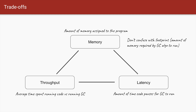The third aspect is latency. Latency is how much time our program stops whenever garbage collection runs. These pauses are generally measured in milliseconds but can go up to a few seconds depending on the size of the memory and the garbage collection algorithm you choose. Ideally we want latency to be as low or as predictable as possible.